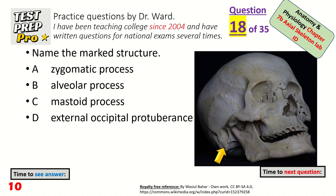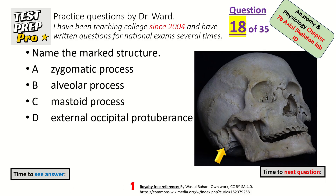Name the marked structure — this is like a bony projection just basically behind where the ear lobes would be on the temporal bone. Mastoid process.